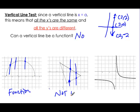As soon as you have one line that doesn't satisfy the vertical line test, you know you don't have a function.